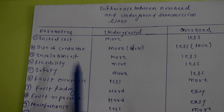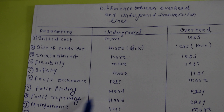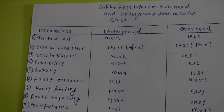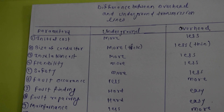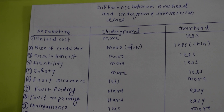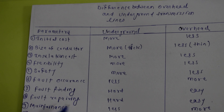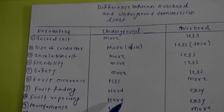The eighth point is fault repairing. Repairing is hard in underground and easy in overhead. In overhead, a lineman can easily access and repair the transmission line. But in underground, we have to dig it up, repair it, and then dig again to re-bury it. So repairing is hard underground and easy overhead.